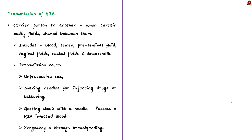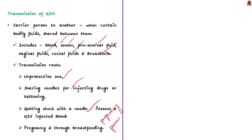HIV is transmitted from one person who is a carrier to another when certain bodily fluids are shared. These include blood, semen, pre-seminal fluid, vaginal fluid, rectal fluid, and breast milk. It can also be transmitted during unprotected sex, through sharing needles when injecting drugs or tattooing, by getting stuck with a needle that has blood of someone with HIV, through pregnancy, and through breastfeeding. The transmission of HIV from a birthing parent to their child during pregnancy, childbirth, or breastfeeding is called perinatal transmission of HIV.